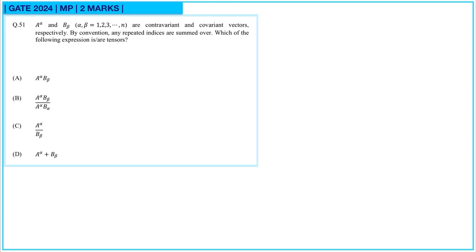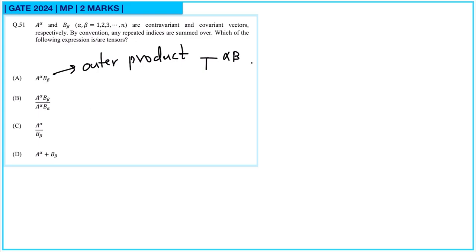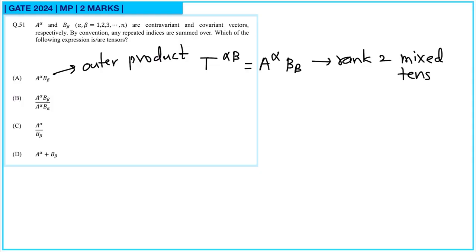Next question. A^α and B_α, taking values from 1 to n, are contravariant and covariant vectors respectively. By convention, repeated indices are summed over. For option A, the outer product of a contravariant and covariant vector gives T^α_β equals A^α B_β. This is a rank-2 mixed tensor, so option A is correct.